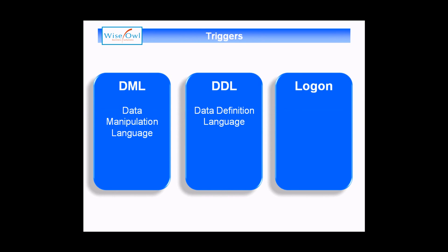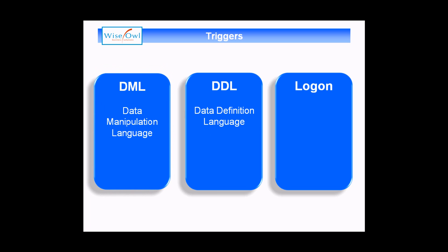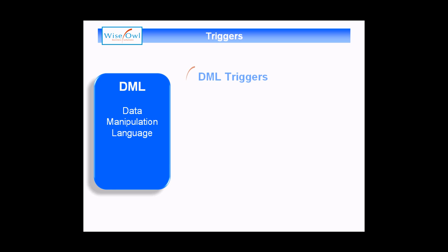In SQL Server, a trigger is a special kind of stored procedure that you can attach to various events which happen in your database. They come in three main flavors: there's DML or data manipulation language triggers, there are DDL or data definition language triggers, and then finally there are logon triggers. In this video we're going to focus on DML triggers, which stands for data manipulation language. That basically corresponds to three main events: insert, update, and delete.